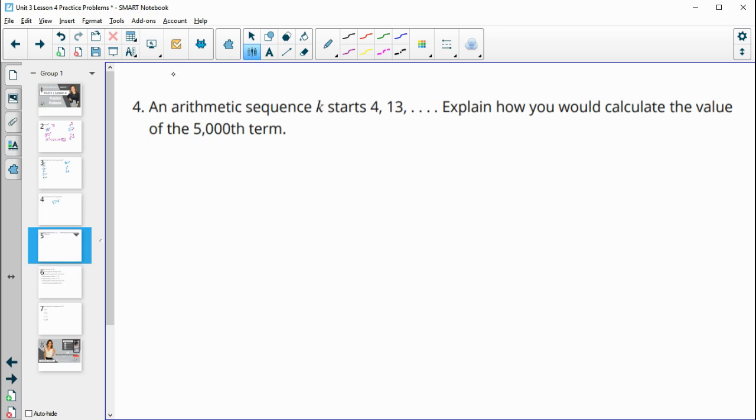Number four, an arithmetic sequence K starts at 4, 13. Explain how you would calculate the value of the 5,000th term. So remember, this is just adding whatever the common ratio is. In this case, nine. So that gets us.